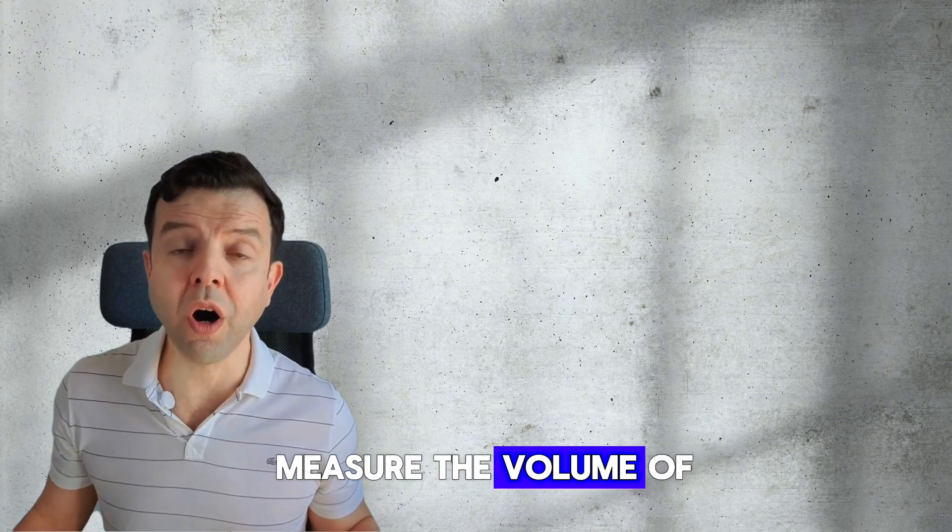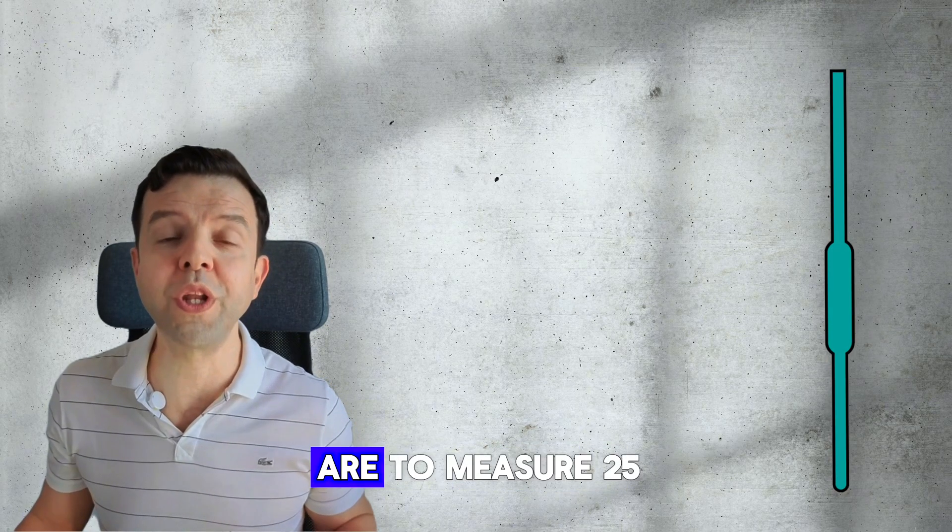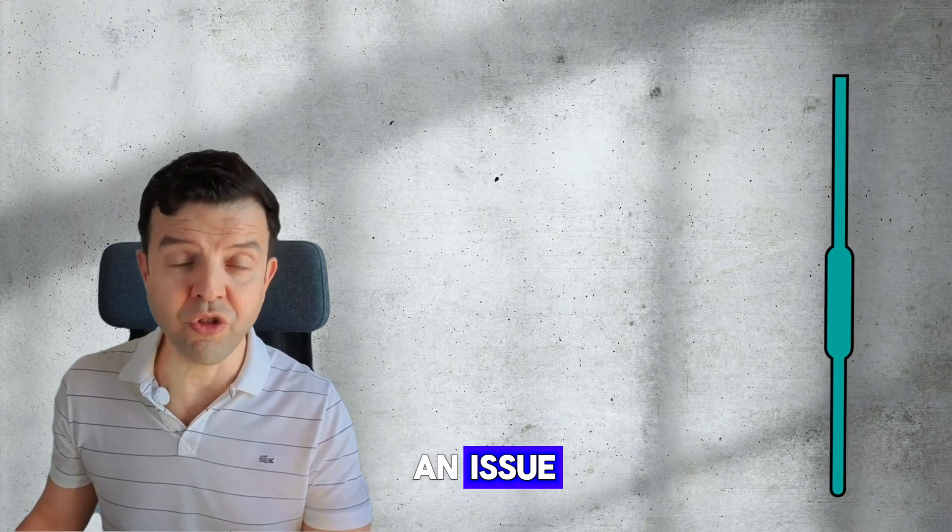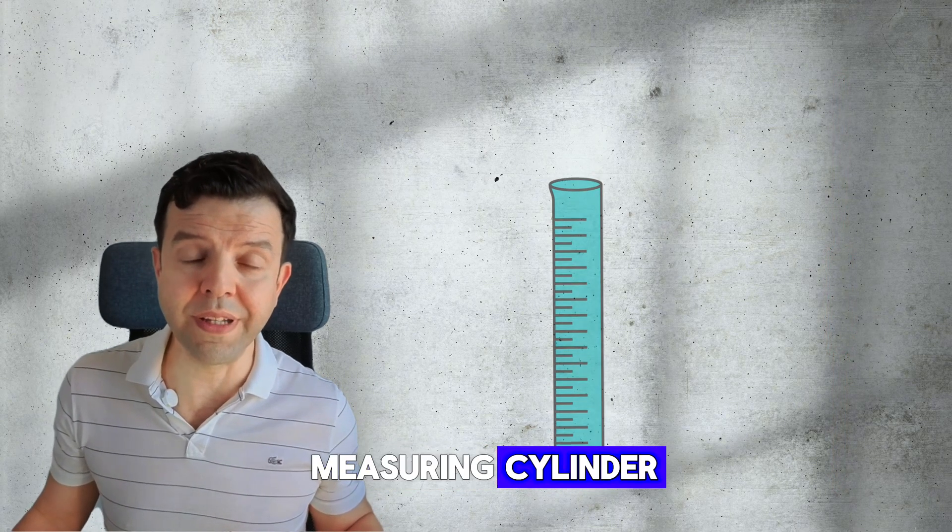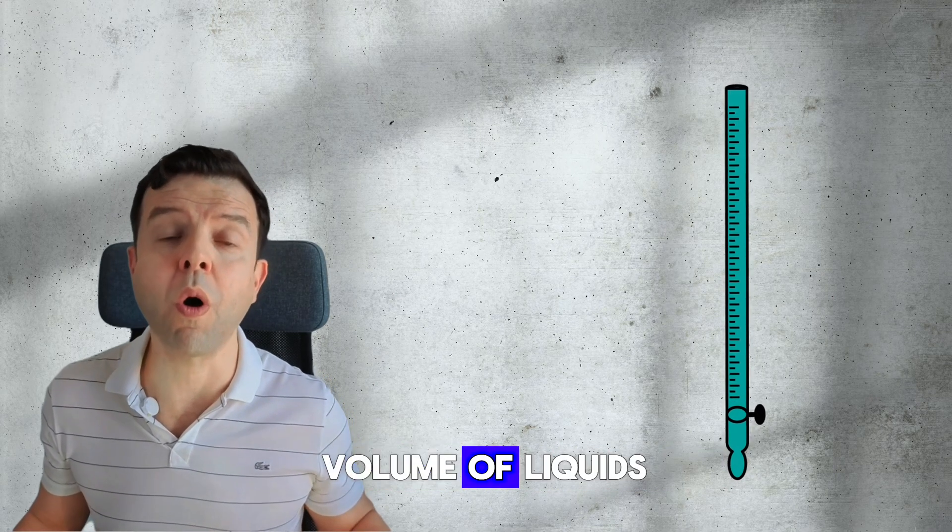Let's talk about lab tools. When you are to measure the volume of a liquid, you have one of three options. A pipette is used when you are to measure 25 cm cubed accurately. If accuracy is not an issue, then always use a measuring cylinder. Burettes are accurate and they measure variable volumes of liquids.